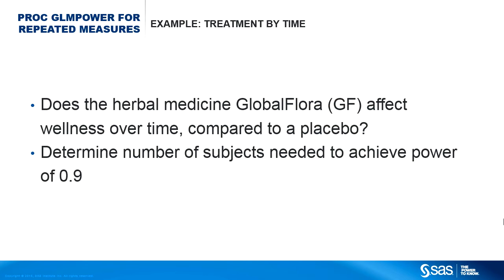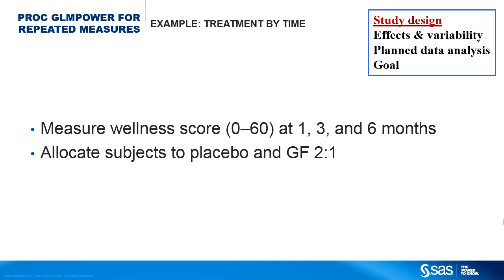Suppose you are a consulting statistician at a manufacturer of herbal medicines, charged with calculating the required sample size for an upcoming repeated measures study of a new product called GlobaFlora, comparing it to a placebo. You want to have at least a 90% chance of getting a significant result in the clinical trial — in other words, your target power is 0.9. Before you can compute the required sample size, you need to specify some more information about the planned study.